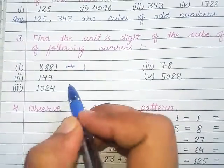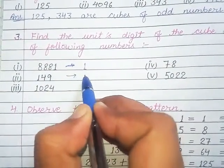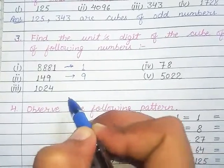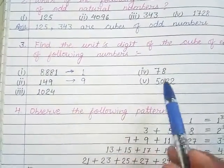What is the unit digit of cube? 1. Next, what is the unit digit? 9. And in this way, you will find out the rest of the cubes.